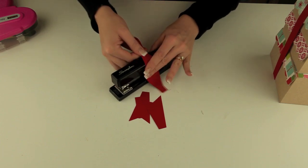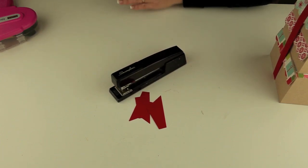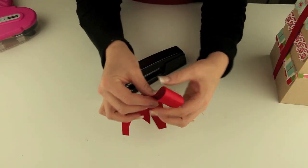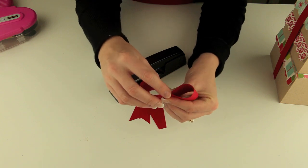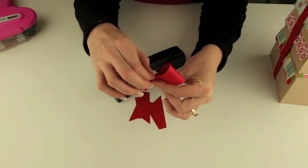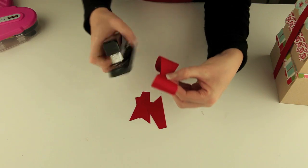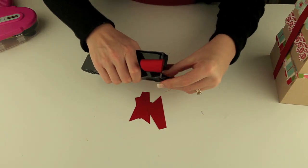If you kind of bend these and get them going into a rounded shape, it really helps so that they don't crease. You can just wrap those around. And I like to put a staple right there in the middle. So I'm just going to do that real quick.